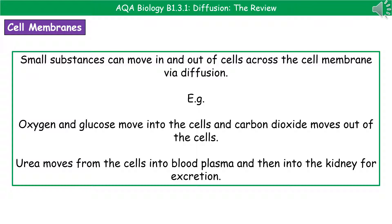Another example that we should be aware of is urea, which is one of those waste products made in your liver. So it moves from the liver cells into the blood plasma. And then it's going to diffuse from the blood plasma into the kidney, where it will then be excreted in your urine later.